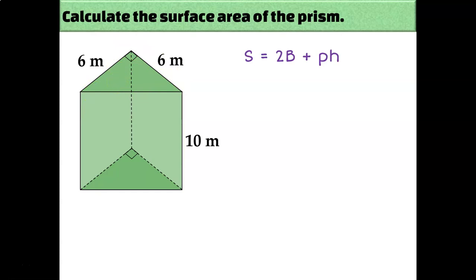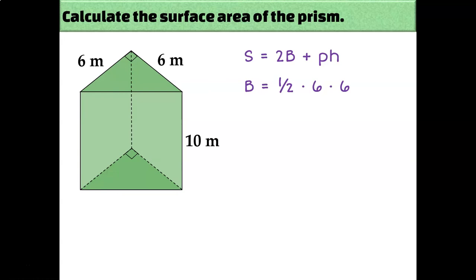The area of a triangle is equal to one half base times height, and remember that the base and height just have to be perpendicular to each other. Since this is a right triangle, I know that the two legs are perpendicular to each other, so I can call one the base and one the height. The area equals one half times 6 times 6, which equals 18 square meters.